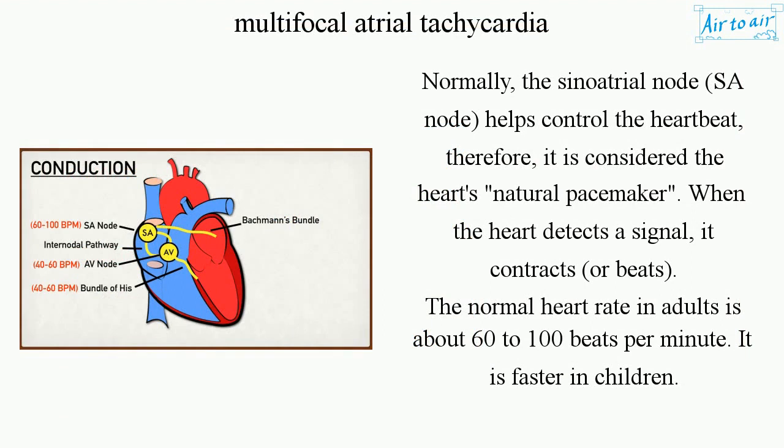Normally, the sinoatrial node (SA node) helps control the heartbeat; therefore, it is considered the heart's natural pacemaker. When the heart detects a signal, it contracts or beats. The normal heart rate in adults is about 60 to 100 beats per minute. It is faster in children.